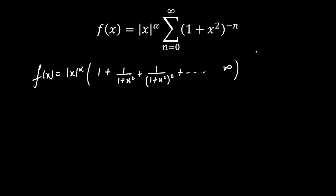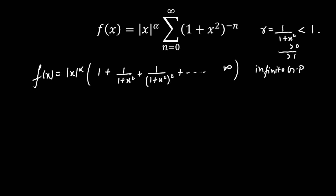If you notice, there is a common ratio here. This is a GP and the common ratio r is 1 upon (1 + x²). Now, x² will be a positive number greater than 0, so the denominator is greater than 1, which means the whole ratio is less than 1. The common ratio is less than 1 and the series goes to infinity, so this is an infinite GP. Because the common ratio is less than 1, I am going to apply the formula for infinite GP.